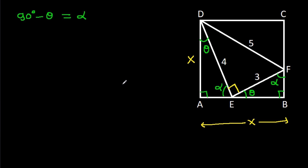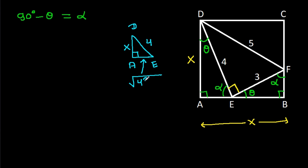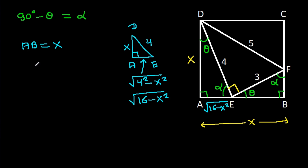In triangle DAE, we have DE is 4, DA is X, and this angle is 90 degrees. So AE will be the square root of 4² minus X², that is the square root of 16 minus X². And since AB is equal to X, BE will be X minus the square root of 16 minus X².